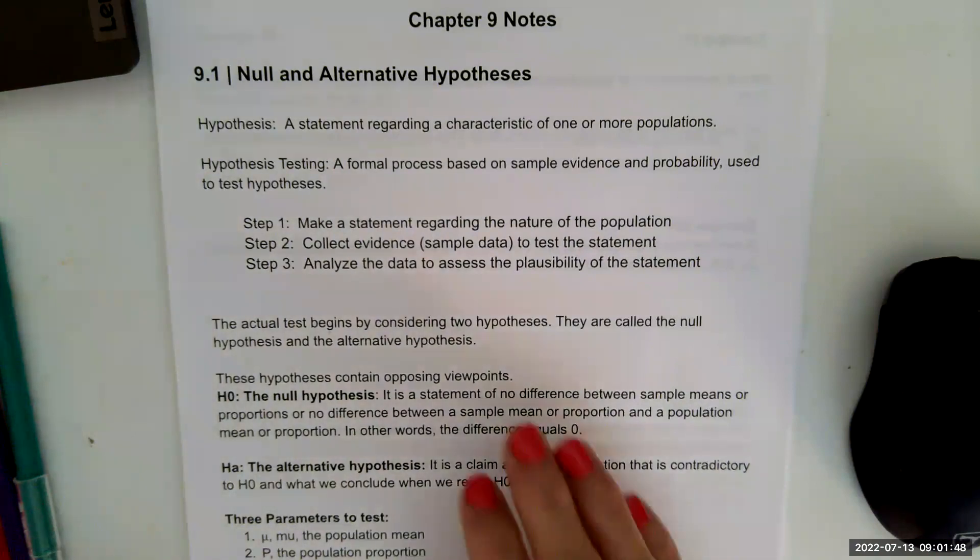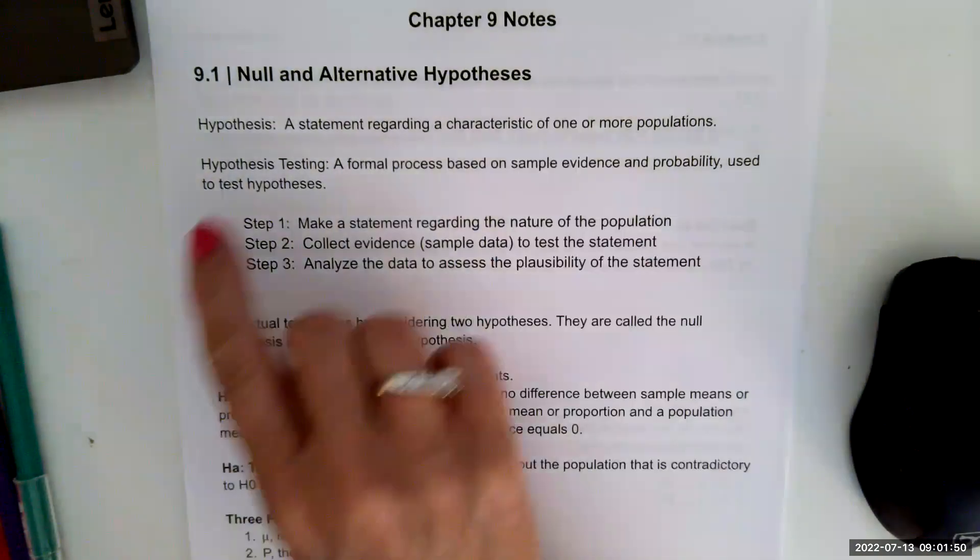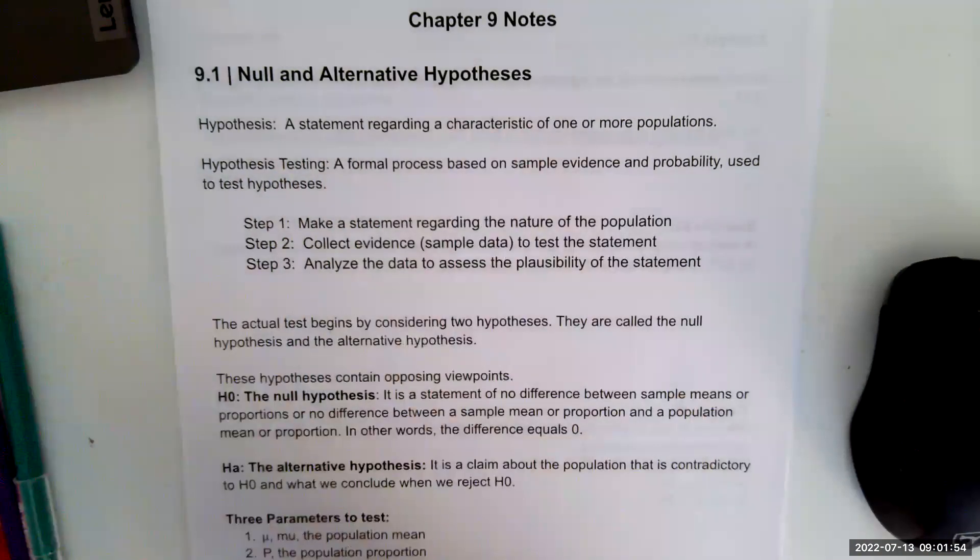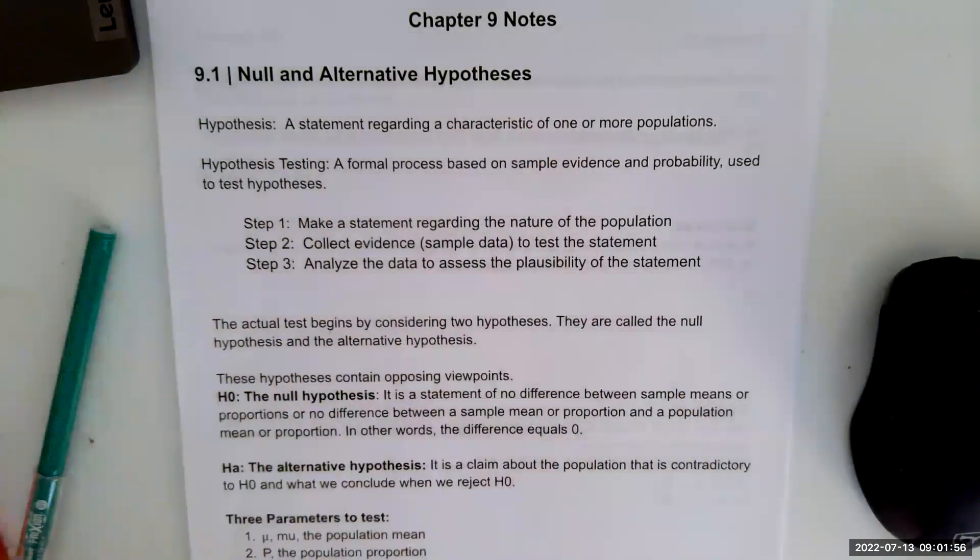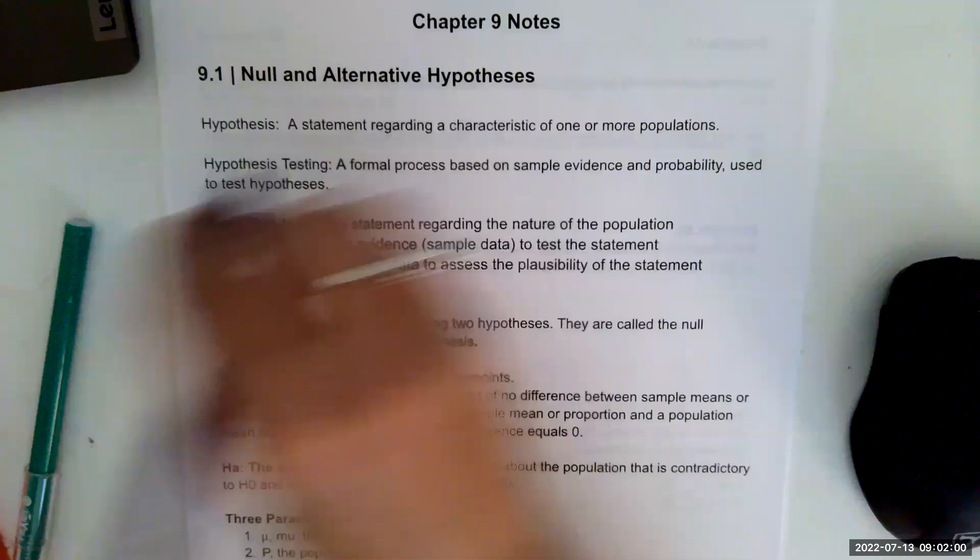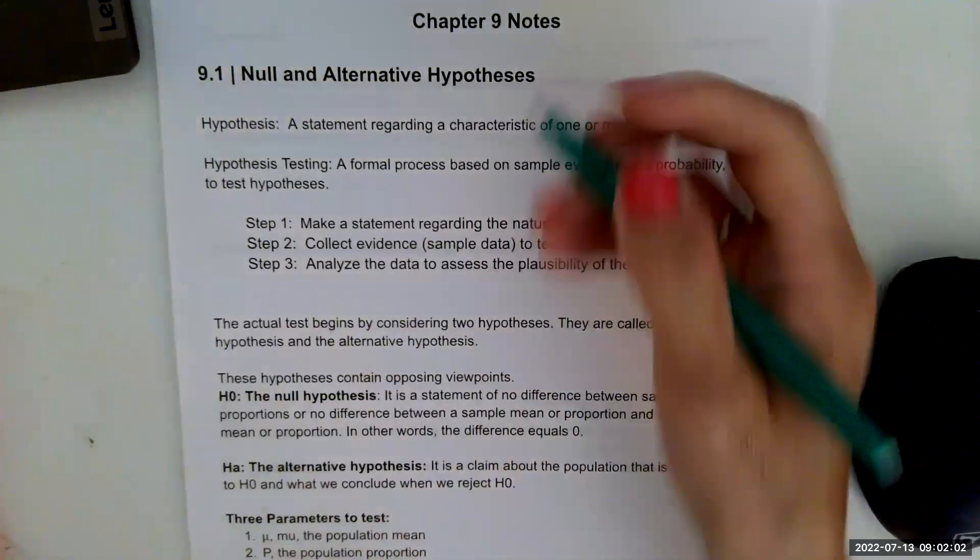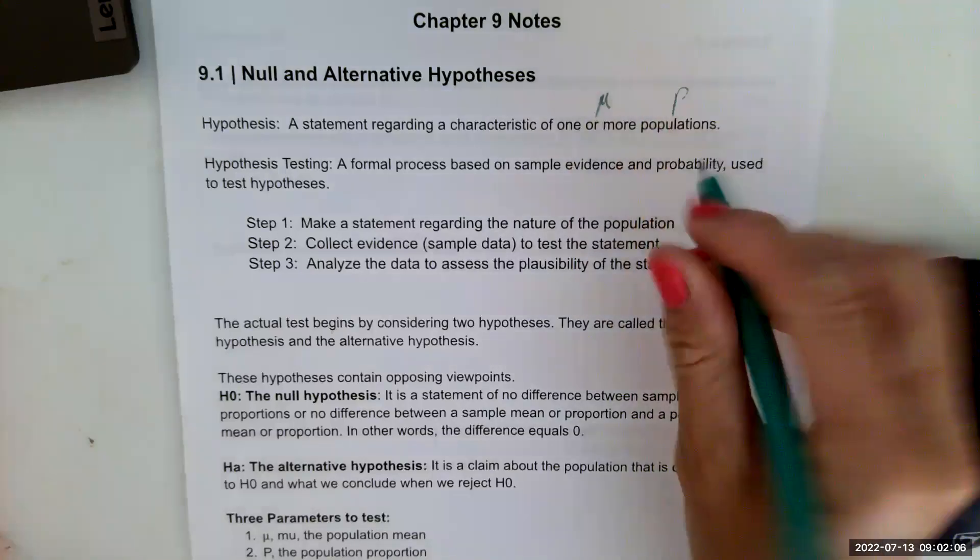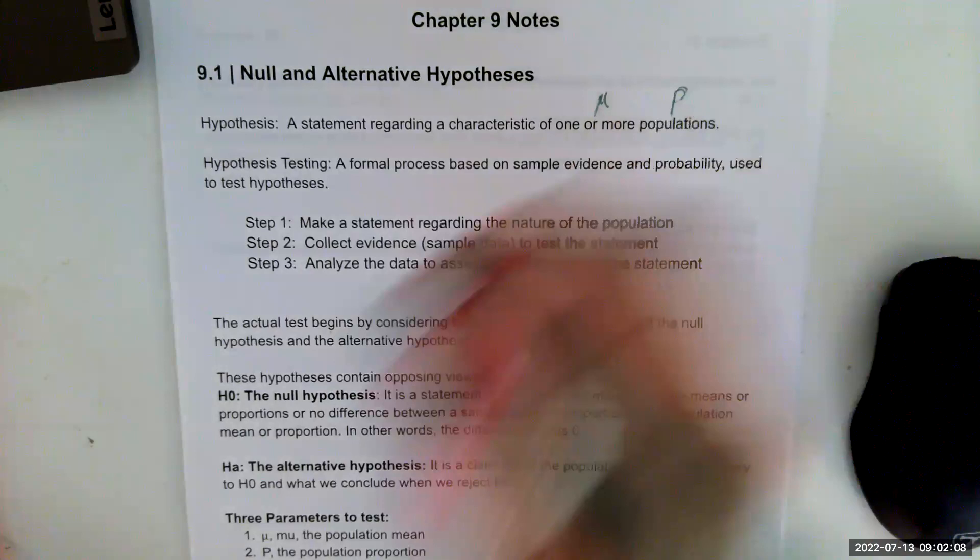We're going to learn some basics about hypothesis testing. A hypothesis is a statement regarding a characteristic of one or more populations. We are going to talk about the population mean and also the population proportion. Those are going to be the two that we're going to talk about.